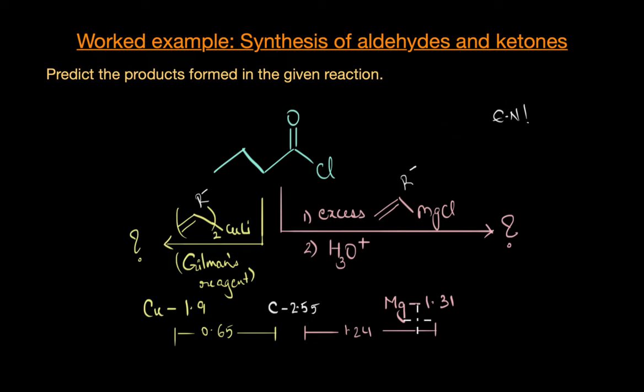Based on these values you can clearly see that the carbon-magnesium bond has a much greater electronegativity difference compared to the carbon-copper bond in Gilman's reagent. As a result, the C-Mg bond is a lot more polar.